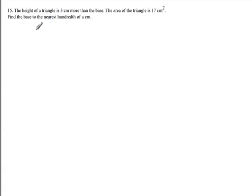In this question we're given that the height of a triangle is 3 centimeters more than the base, and that the area of the triangle is 17 centimeters squared. The first thing that's going to help you is if you write the formula for area of a triangle, which is area equals base times height divided by 2.